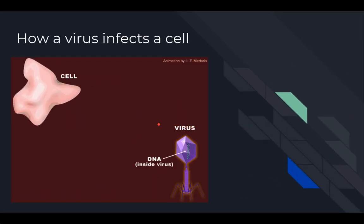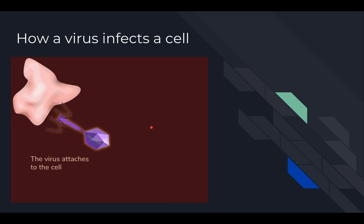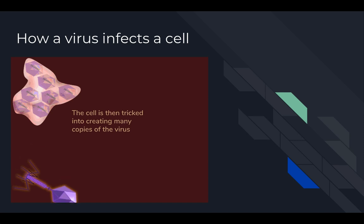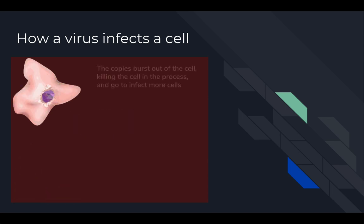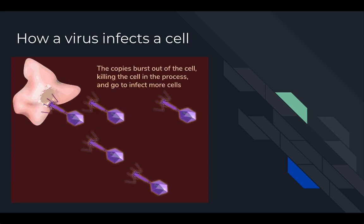This is how a virus infects a cell. First, the virus attaches to the cell. Then the virus injects the genetic info into the cell. That genetic info tricks the cell into making many, many copies, and the copies burst out of the cell, killing the cell, and go on to infect more cells.